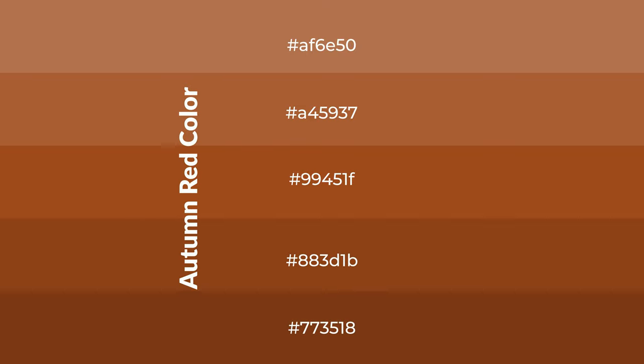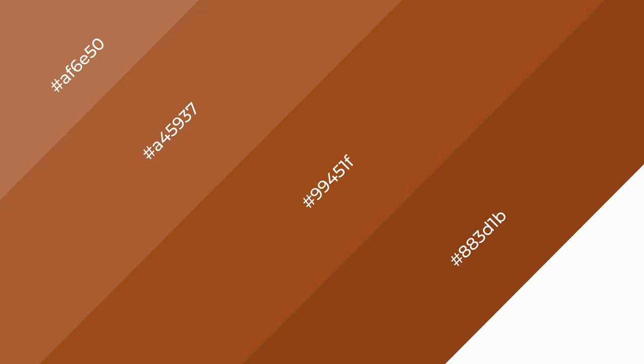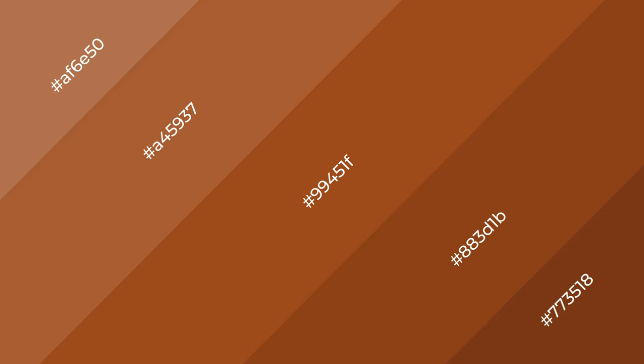To generate shades of a color, we add black to the color, and it is used in patterns and 3D effects. Layers and shades create depth and drama. Autumn red is a warm color and it emits cozier and active emotions.